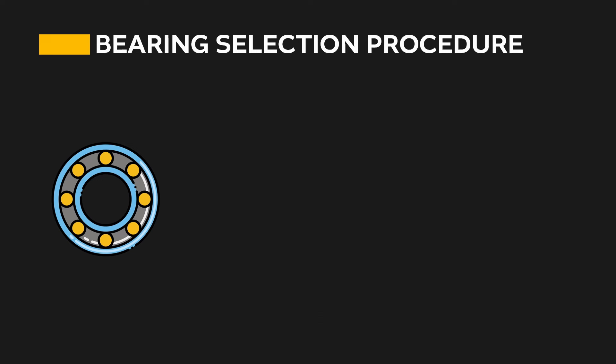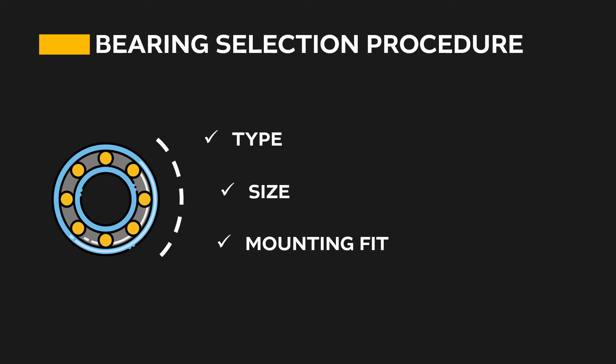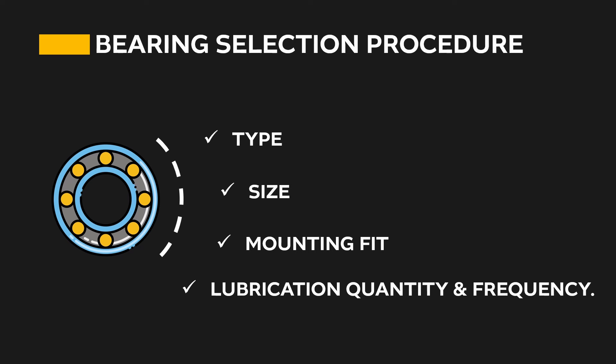Bearing selection procedure means we have to calculate and define everything for our bearing in any machine or product design — like bearing type, size, mounting fitment, lubrication quantity and lubrication frequency. As there are so many steps, I have divided this series into 4 parts, the same as the steps.